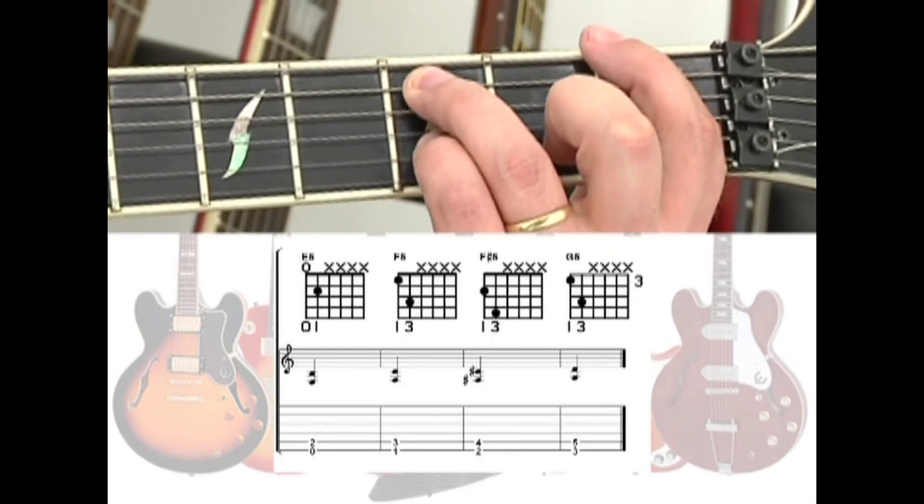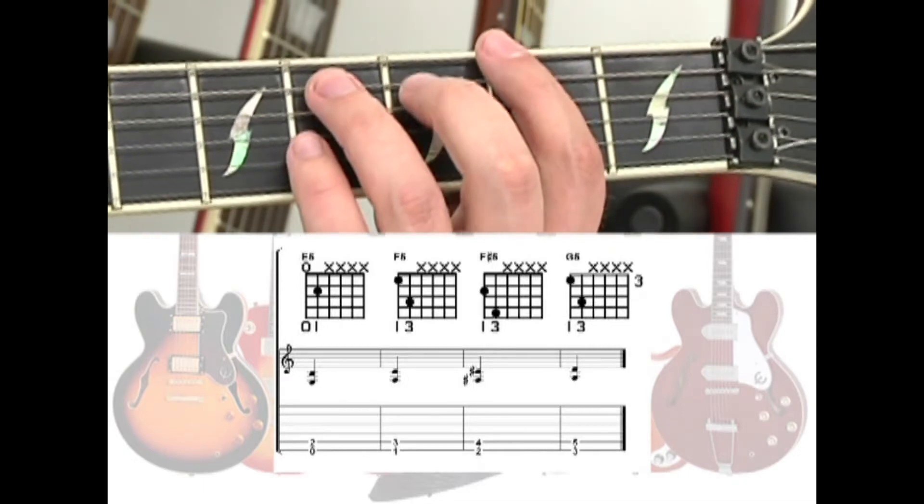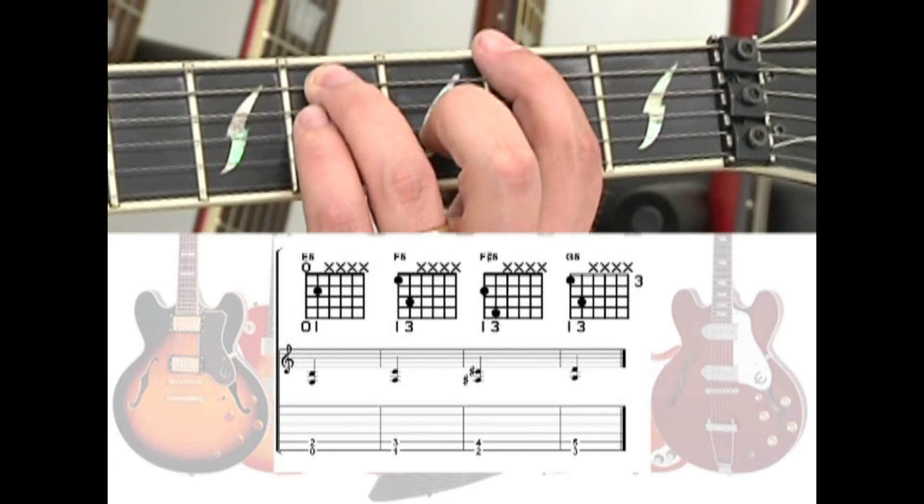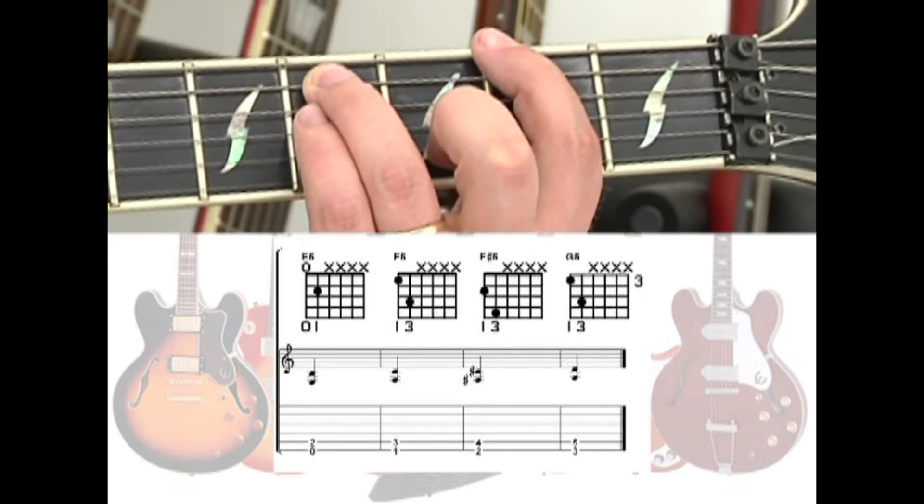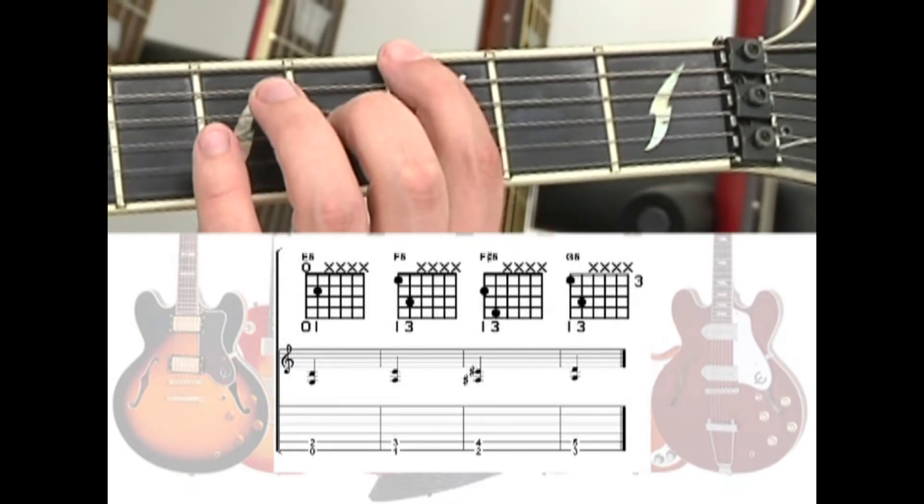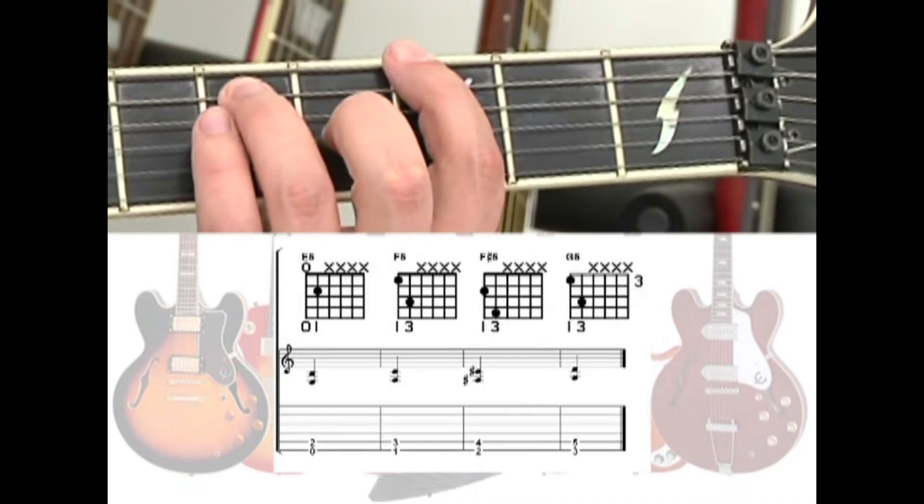Move the shape up one more fret and you have an F sharp 5 power chord. Up one more fret and you have the G5 power chord, 6th string 3rd fret along with the 5th string 5th fret.